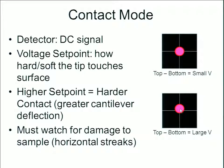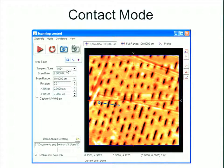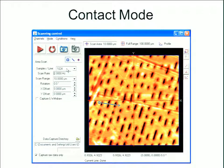Here's an image of software used to run an AFM scan. This was in contact mode. On the left we see how many data points were gathered per line — 1,024 data points. This is a 10 by 10 micron square, so that would be 1,024 times 1,024 data points — over a million data points plotted in this image.